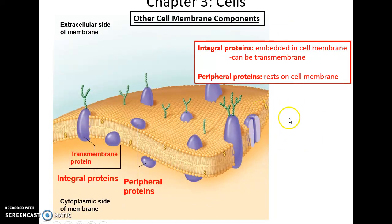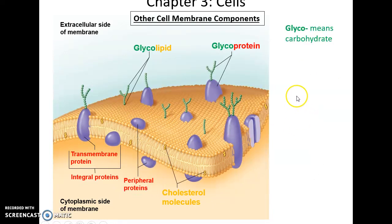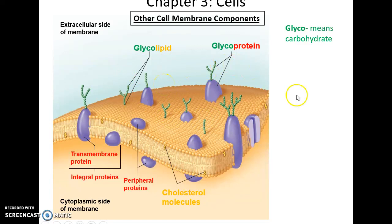There are other structures in the cell membrane. These include proteins. There are integral proteins that are embedded partially in the cell membrane or pass completely through. The ones that pass completely through are transmembrane proteins. And there are peripheral proteins that are bound to the surface of the cell membrane. Some other structures are glycolipids — fatty acid chains attached to a carbohydrate group — or glycoproteins, proteins that have carbohydrate groups attached to them. These carbohydrates are usually facing toward the outside, the extracellular side.